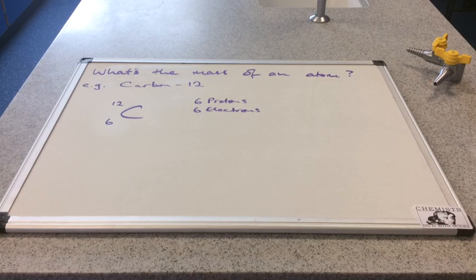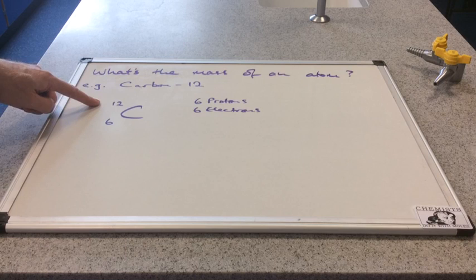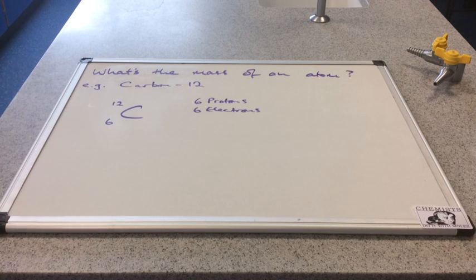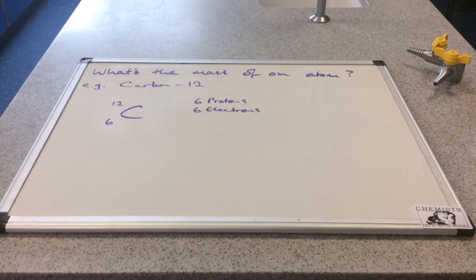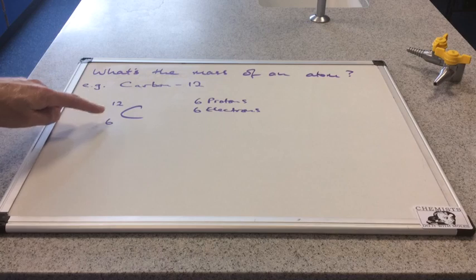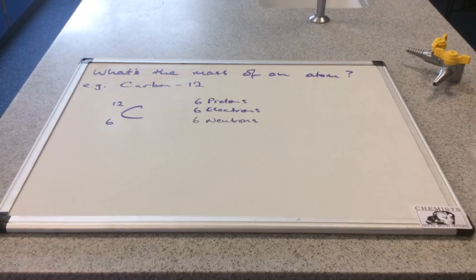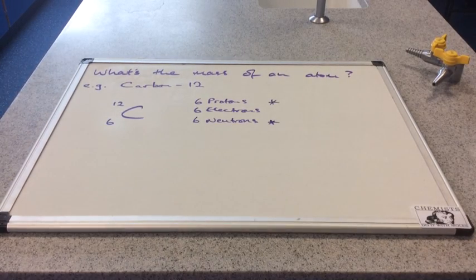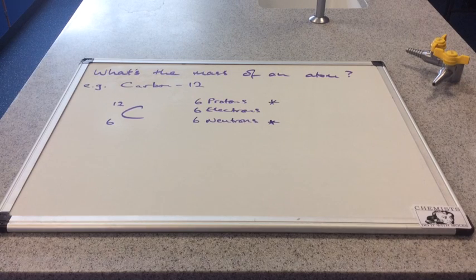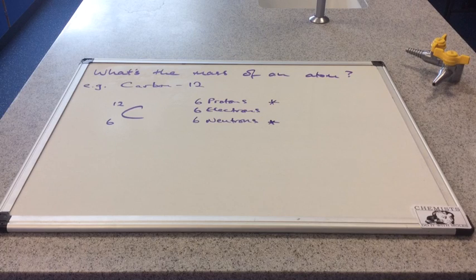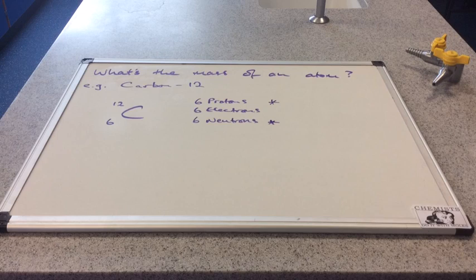The mass of the atom, the 12, well the particles that make up the mass of atoms are the protons and neutrons. So if we've got 6 protons there must also be 6 neutrons, and remember the quick way to work that out is to subtract the small number from the large number. I've starred the protons and neutrons because they are the particles with some mass worth speaking about. Obviously electrons do have a mass but it's so tiny in comparison we're going to ignore their mass.